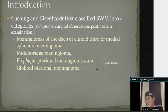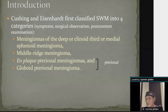Cushing and his colleagues first classified this group of tumors into four categories on the basis of symptoms, surgical observation, and post-mortem examination. The first is the medial group, the second is the middle group, and the lateral type — these two groups of sphenoid wing meningioma are pterional or lateral, divided into plaque pterional meningioma and globoid pterional meningioma.